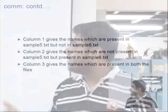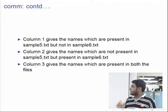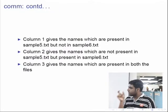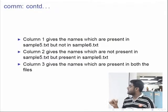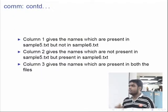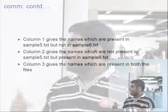To summarize: column 1 gives names present in sample5.txt but not in sample6.txt. Column 2 gives names present in sample6.txt but not in sample5.txt. Column 3 gives names present in both files. But note that the comm command requires input in sorted format — all names should be in sorted format. We will see how to sort the file in just a few minutes.